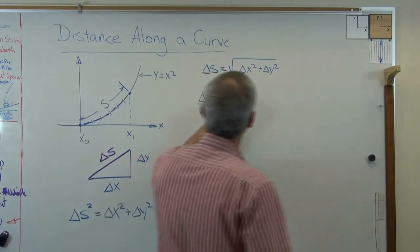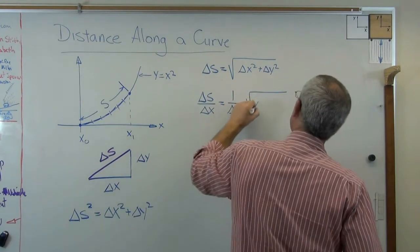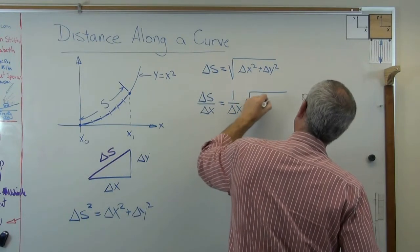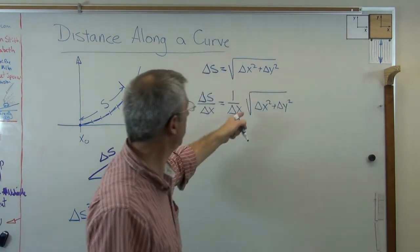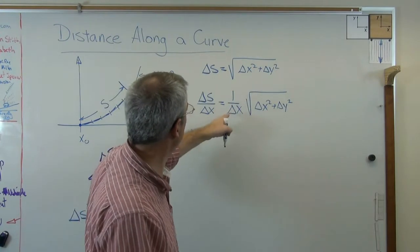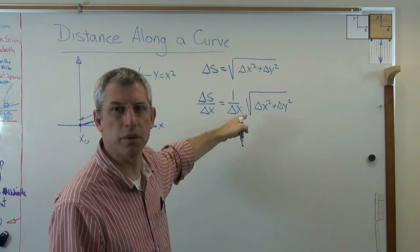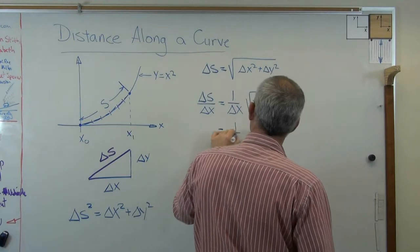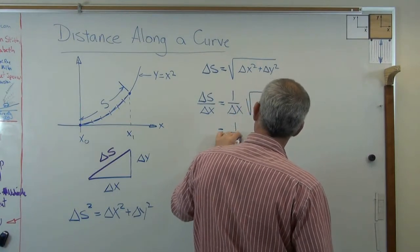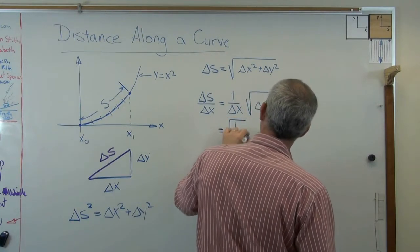All right, do that. So I've got delta x squared plus delta y squared as before. So far, it isn't obvious where I'm headed here. This looks like a complication, not a simplification. Just bear with me. This is going to work out. Now, 1 over delta x is also equal to this.